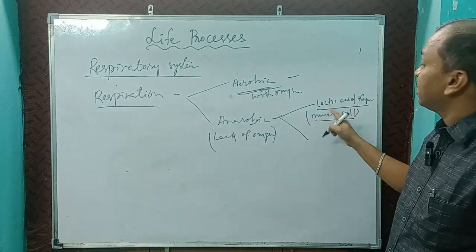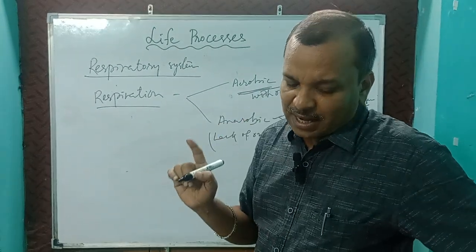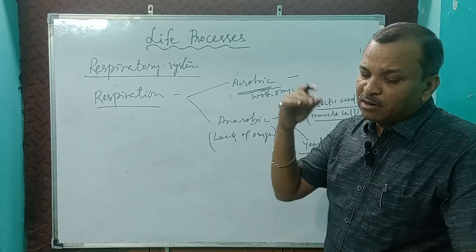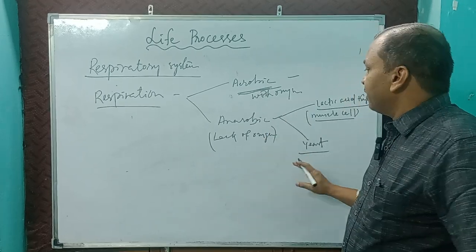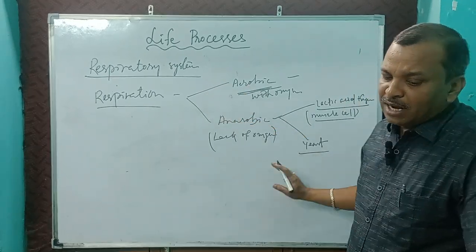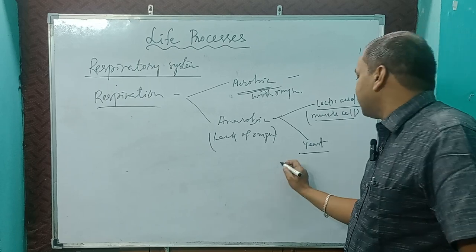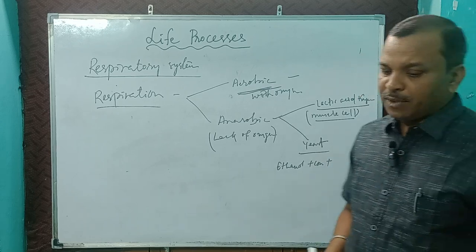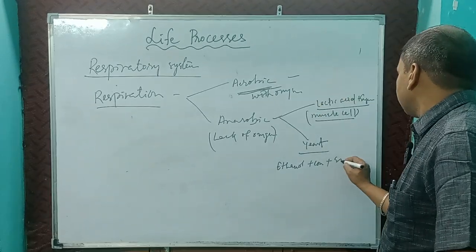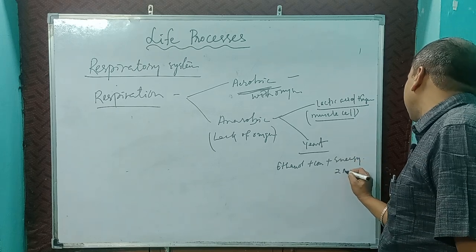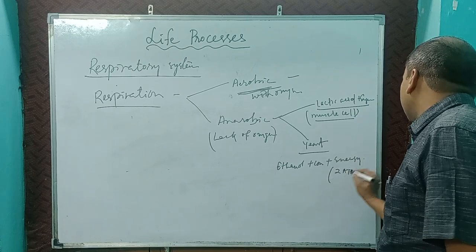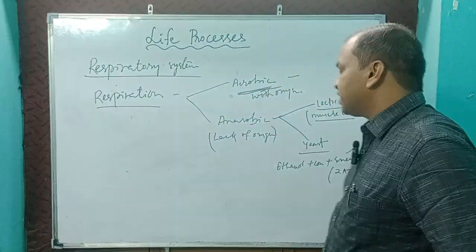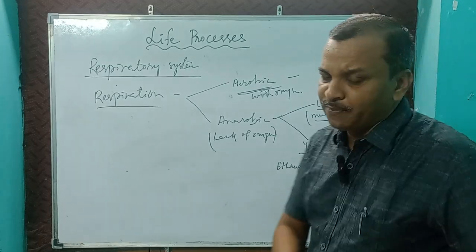Anaerobic respiration occurs in muscle cells in the human body. Also, yeast performs anaerobic respiration — without the presence of oxygen, yeast produces ethanol plus carbon dioxide plus a small amount of energy. In anaerobic respiration, 2 ATP of energy is released. Remember this — 2 ATP.